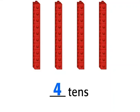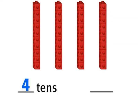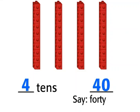We have four tens. We can count by tens to find out how many ones there are in the four ten trains. Ten, twenty, thirty, forty. This is how we write and say forty. Thank you.